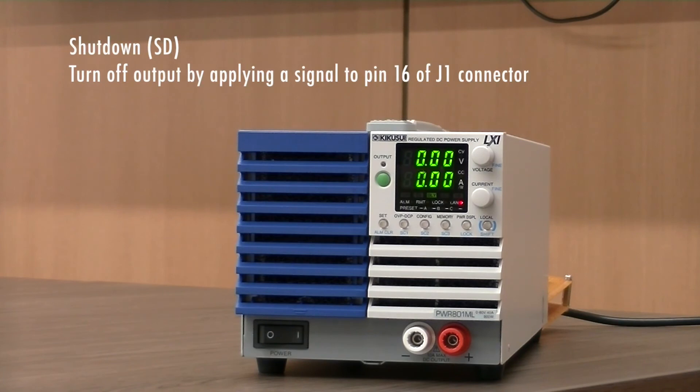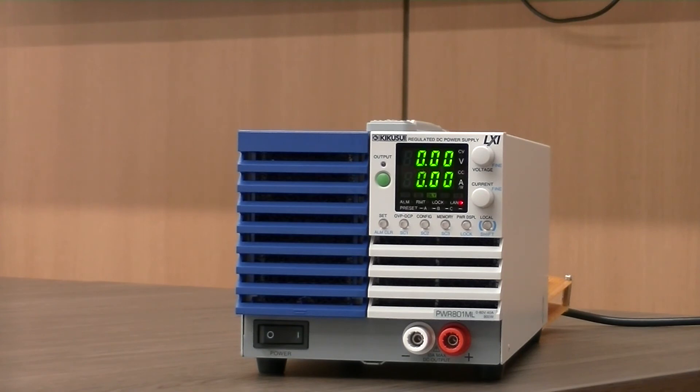The SD or shutdown function allows you to turn off the output by applying a signal to pin 16 of the J1 connector whenever an abnormal condition occurs. You can release the shutdown function by turning the power switch off and then back on.